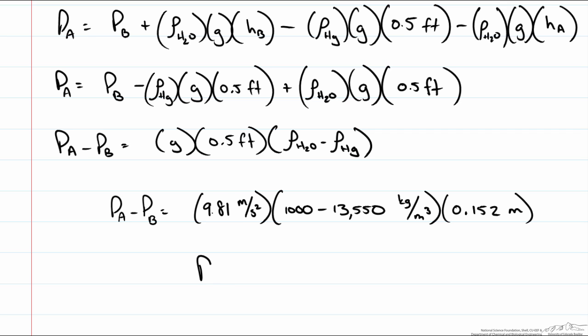And so our pressure differential between pipes A and B is negative 18,760 pascals or 18.76 kilopascals. So this would be our final answer.